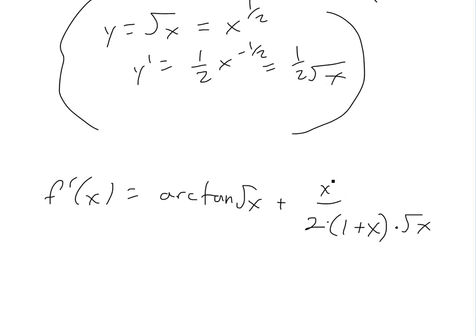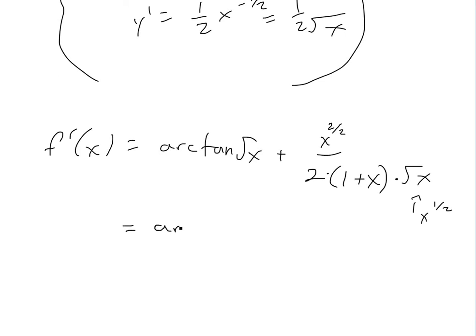And now remember, this x, it could be written as x 2/2, and this is an x 1/2. So then we could subtract this from this, and we'll have a square root of x on top, or the final answer will be arctan of square root of x,